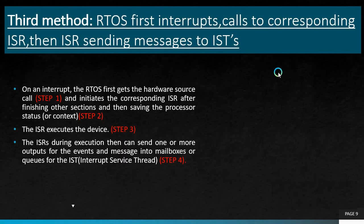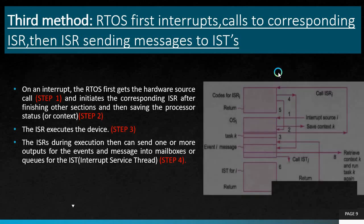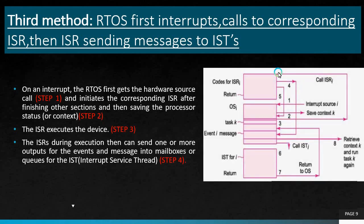The third method is: RTOS first interrupts, calls the corresponding ISR, then the ISR sends messages to ISDs (inter-service daemons). When an interrupt occurs, the RTOS first gets the hardware source code — this is step 1. Then it initiates the corresponding ISR only after finishing other currently active sections and saving the process status — step 2. In step 3, the ISR executes. In step 4, the ISR can send one or more outputs for events and messages into mailboxes or queues for ISDs.